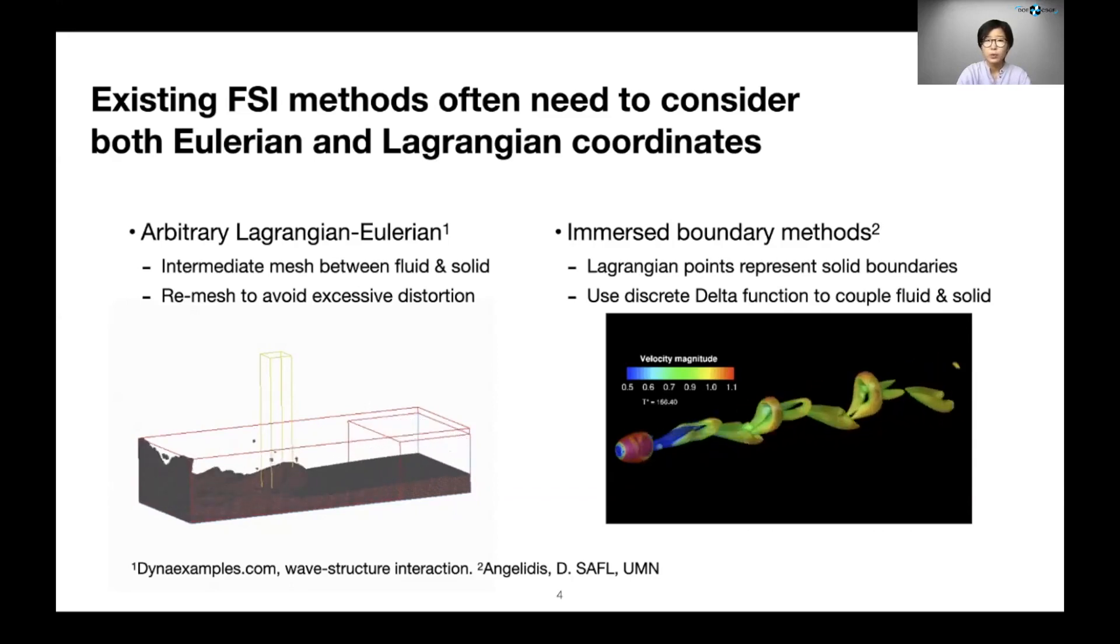One of them is arbitrary Lagrangian-Eulerian. In this method, the computation happens on an intermediate mesh that's neither Eulerian nor Lagrangian. But remeshing the fluid part of the mesh becomes really important to avoid excessive deterioration and distortion in the mesh.